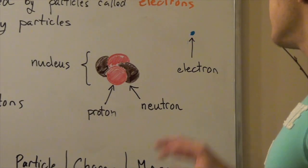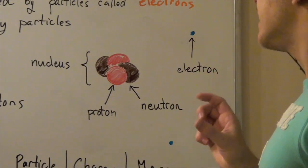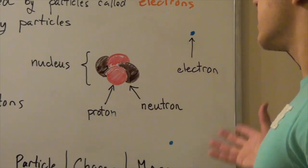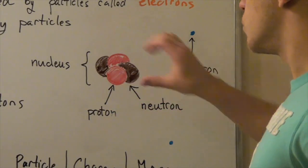And that's because our electrons are very, very small. And they orbit our nucleus at a very, very great distance compared to the size of the nucleus itself.